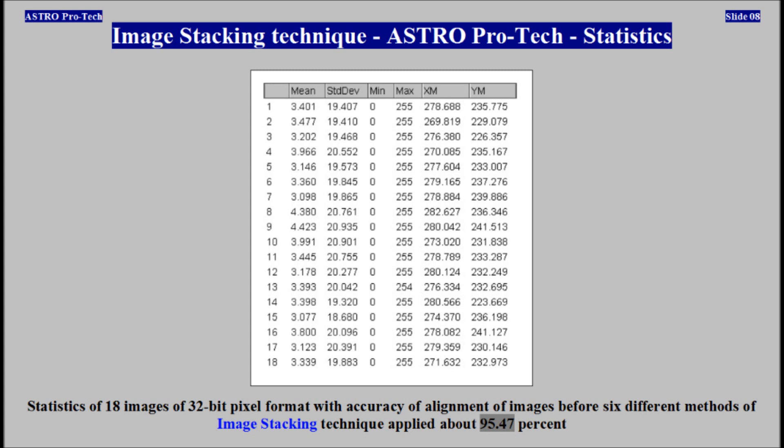The accuracy of alignment of images before the six different methods of image stacking technique were applied was about 95.47%.